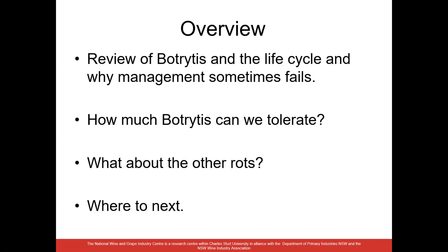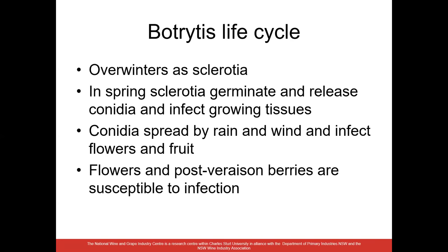Botrytis cinerea overwinters in the vineyard on dormant canes and on vineyard trash as specialised structures called sclerotia. These are hard structures resistant to desiccation. In spring, these sclerotia germinate and release spores called conidia, which are the infectious agents that infect growing tissue early in the spring. Conidia are spread by rain and wind, and we're primarily concerned with infection of flowers and fruit. Post-veraison berries are most susceptible to infection late in the season.